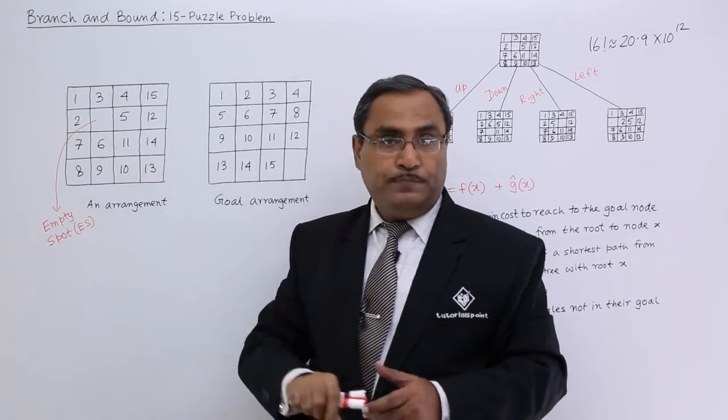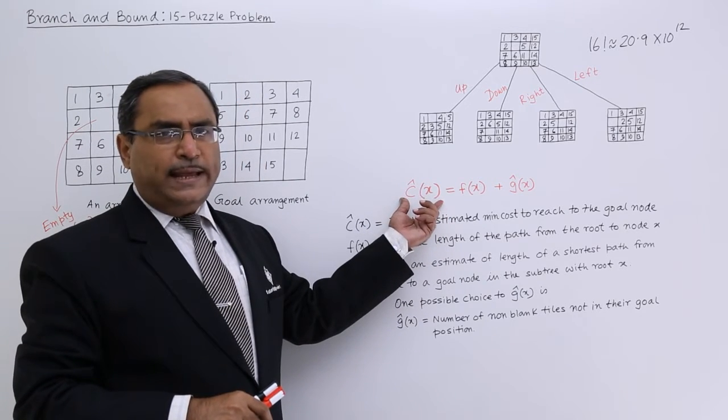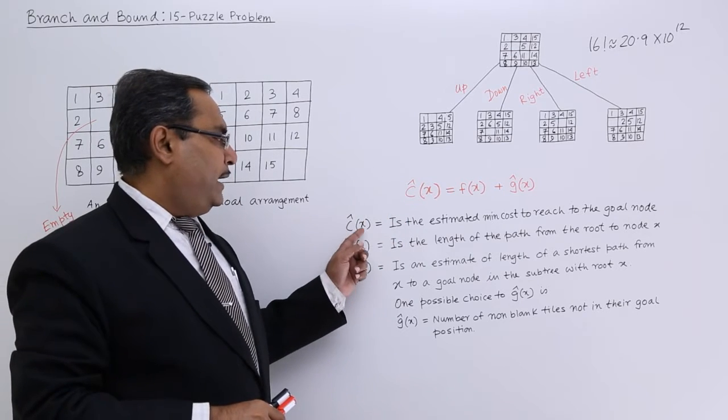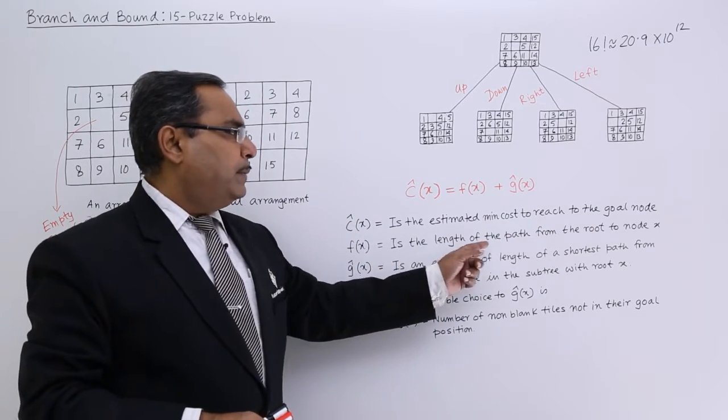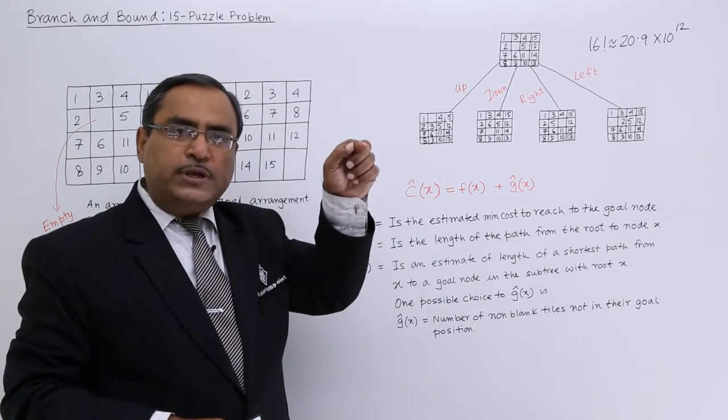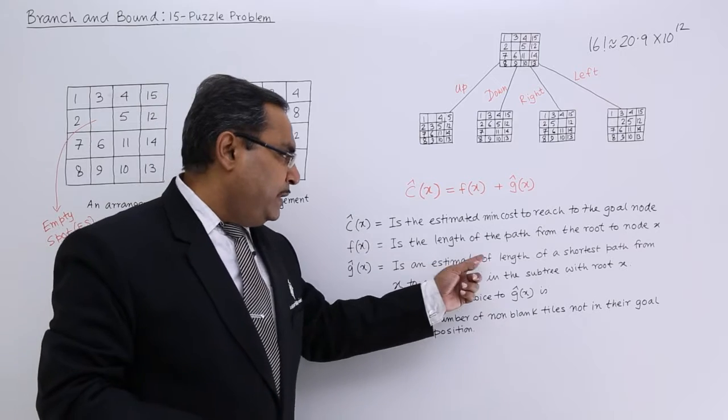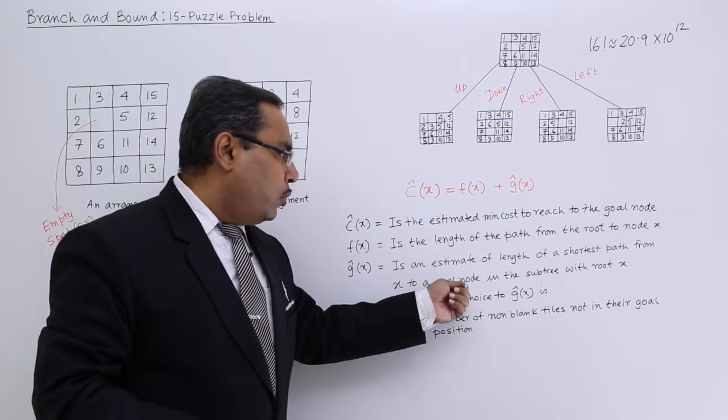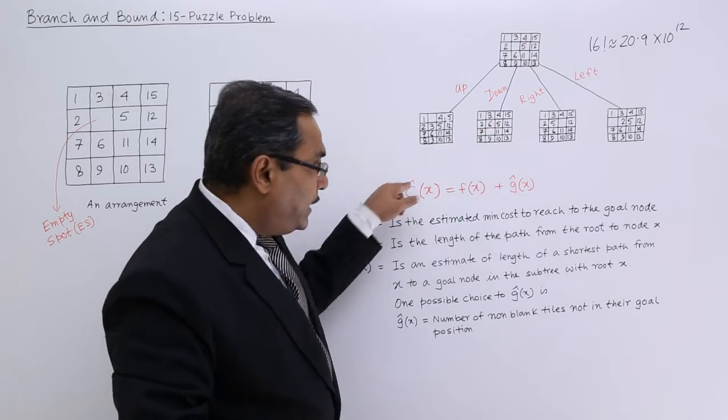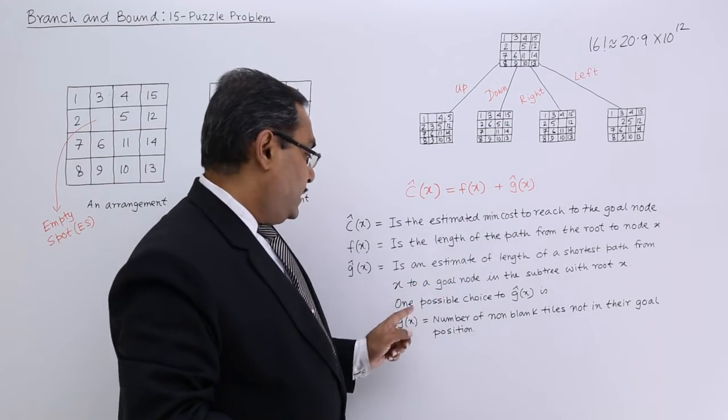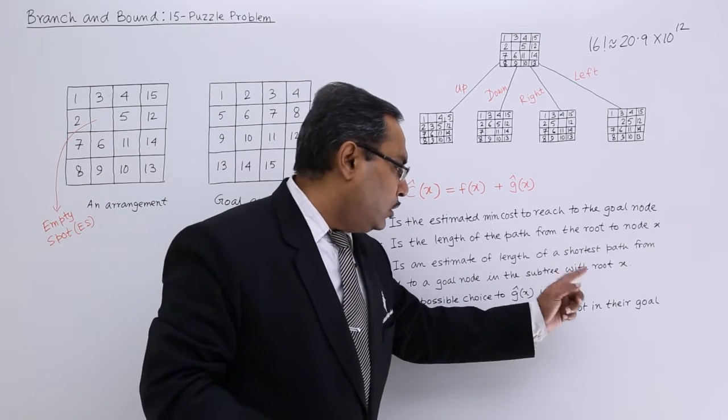I can suggest one such heuristic here. This is my estimated cost. C cap X is the estimated cost to reach the goal node, and F cap X is the length of the path from the root to the node X. So that is the number of moves I require to come to this particular node X from the root. And G cap X is an estimate of length of a shortest path from X to a goal node in the sub-tree with root X. One possible choice of G cap X is equal to number of non-blank tiles not in the goal position.